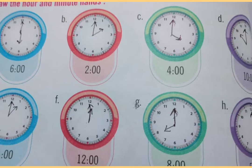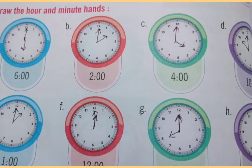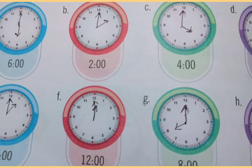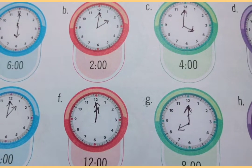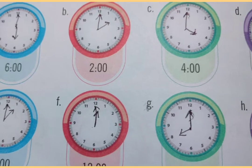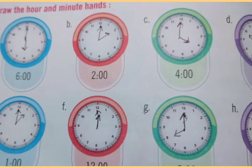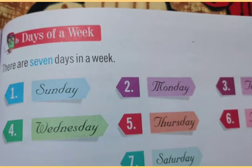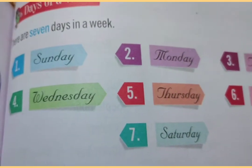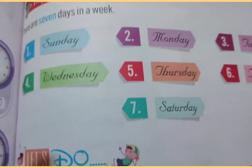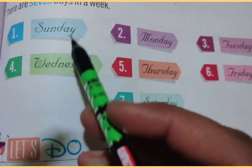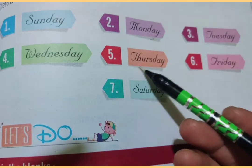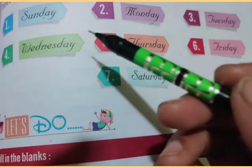Now we can draw the minute and hour hands in these watches and mention the time. Now we will solve the exercise related to days of the week on page 91. There are seven days in a week: Sunday, Monday, Tuesday, Wednesday, Thursday, Friday, Saturday. These are the days.